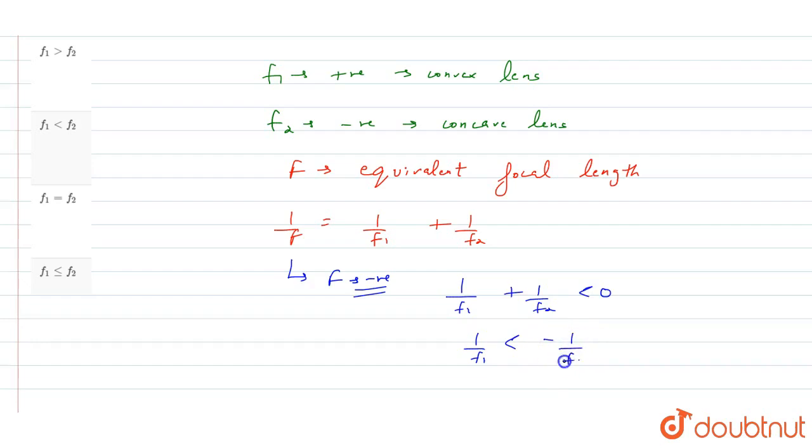So 1 by f, which equals 1 by f1 plus 1 by f2, should be less than 0. For the combination to behave like a concave lens, 1 by f1 plus 1 by f2 should be negative. So this is less than 0.